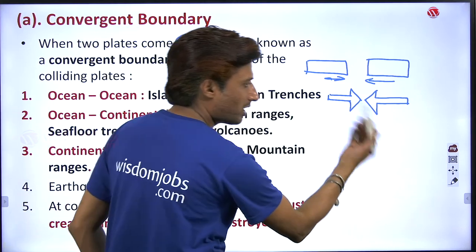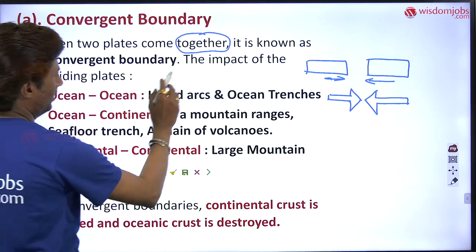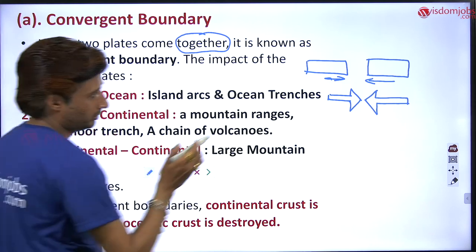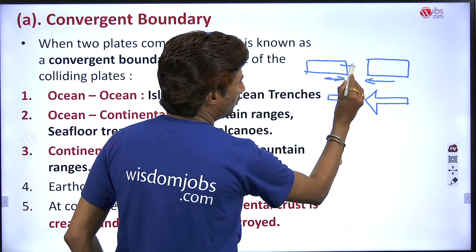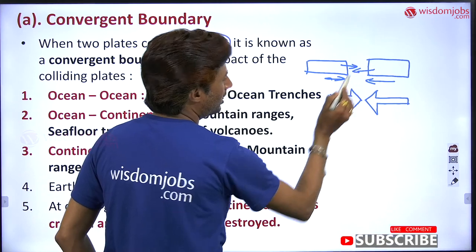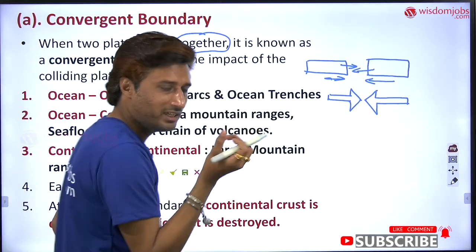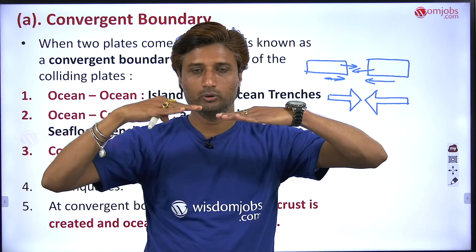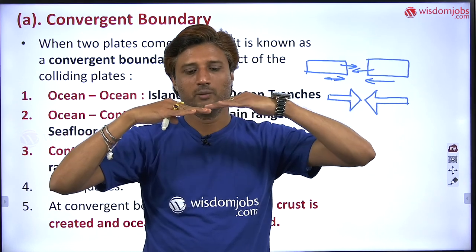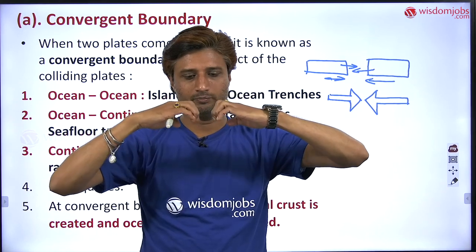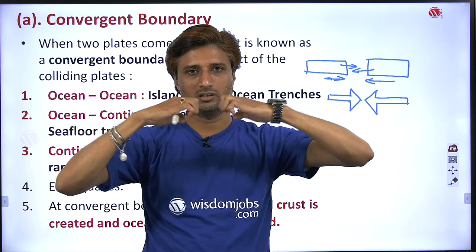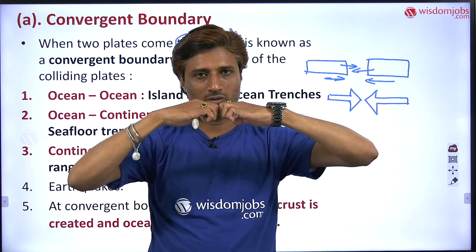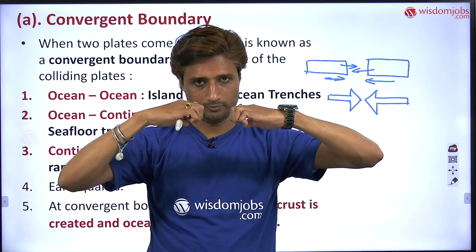This is what convergence boundary — the impact of the colliding plates. It is clear that they are colliding on each other as they approach towards each other. This is one plate and this is another plate, both approaching towards each other. The boundaries forming here are of convergent type — they are converging.